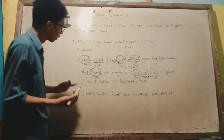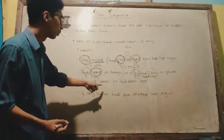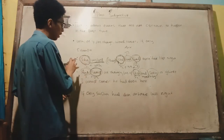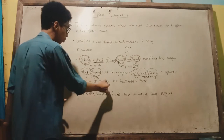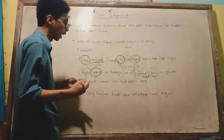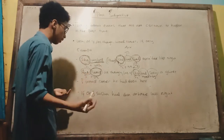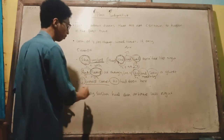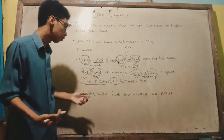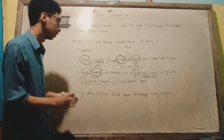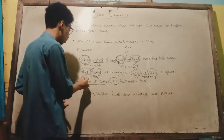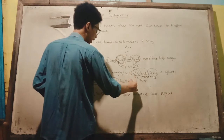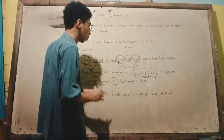Moving to the next example: 'I would rather he had been here.' With 'would rather,' we also have two subjects — I and he. But in 'would rather,' we don't use a verb behind it; we just use 'would rather' directly. Here, we can also use verb three or 'been' — it depends on what you want to express.